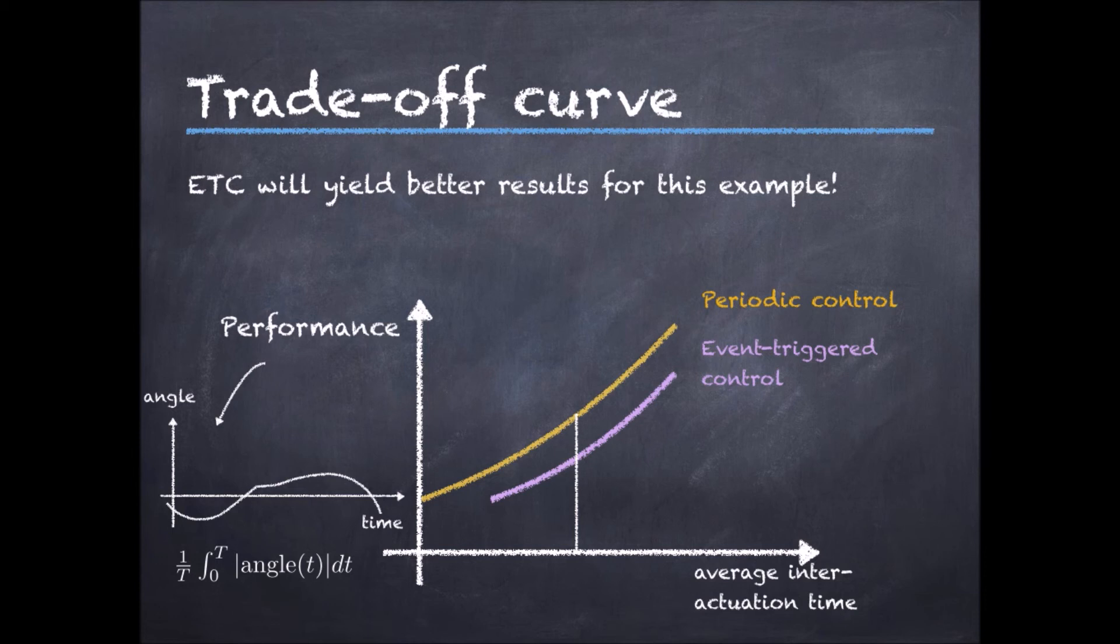This is clearly the case for the inverted pendulum, but one can also find systems where this is not the case. So the performance of Lebesgue event-triggered control can actually be worse than that of periodic control for the same number of times the loop is closed.